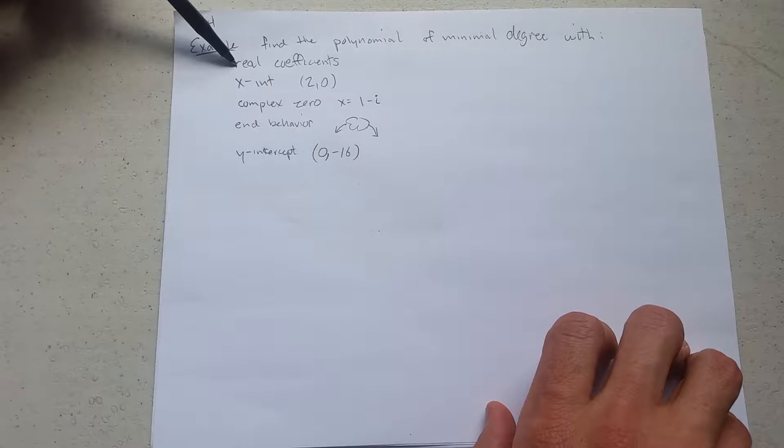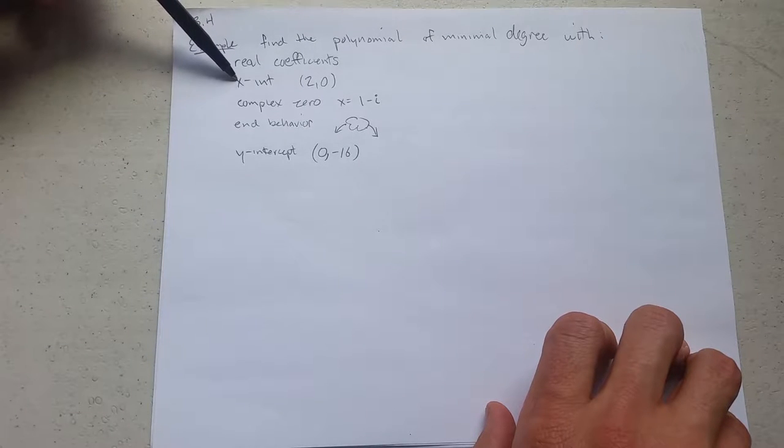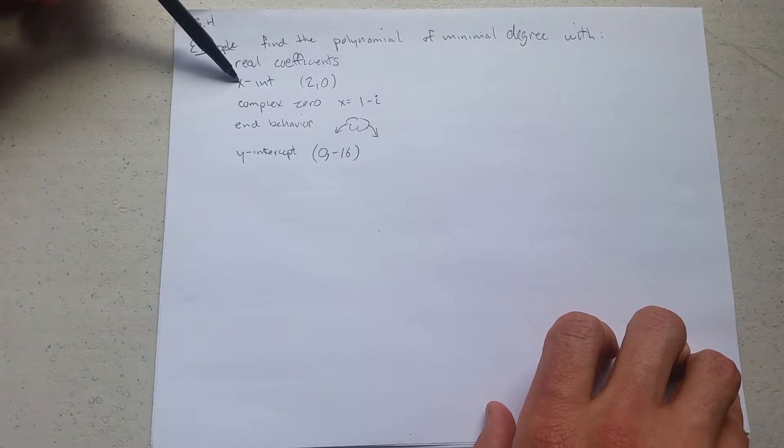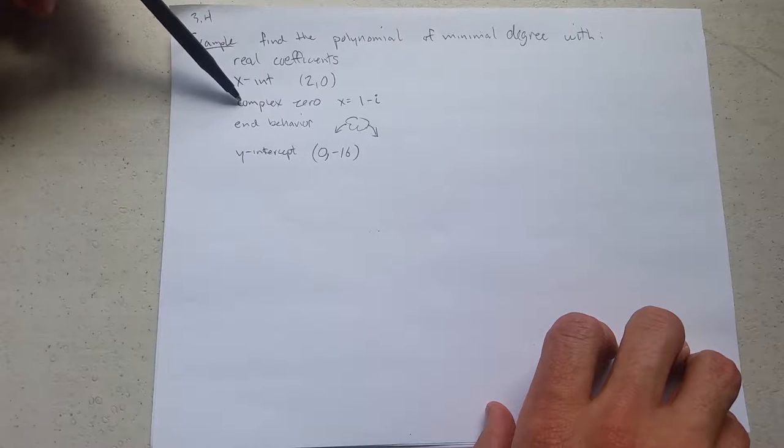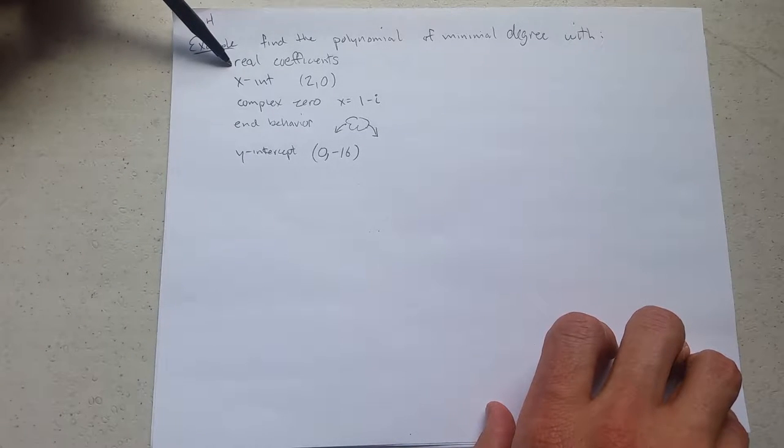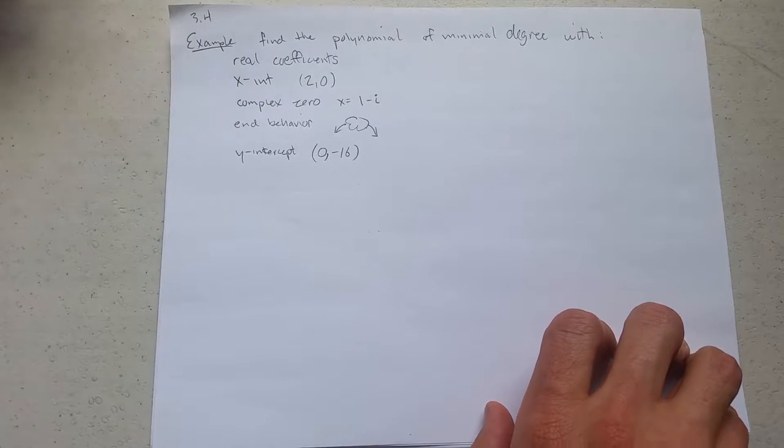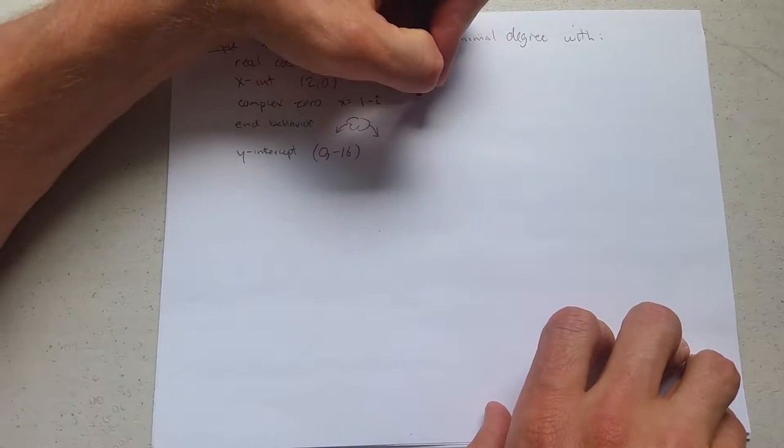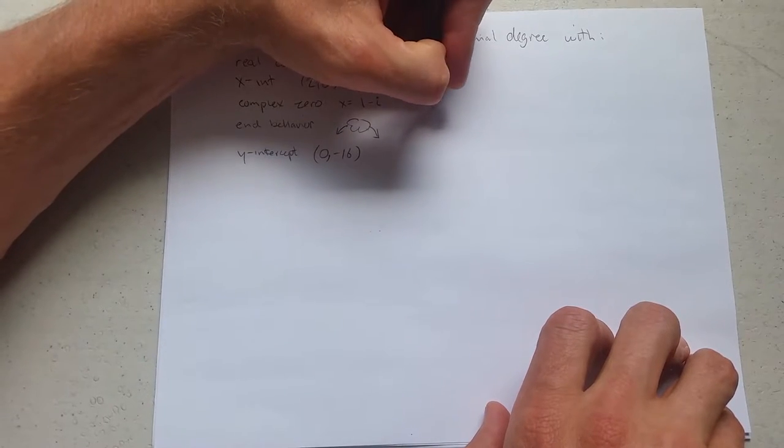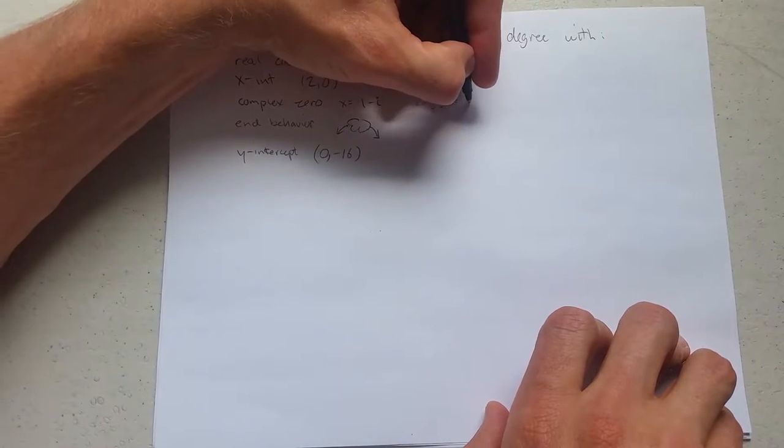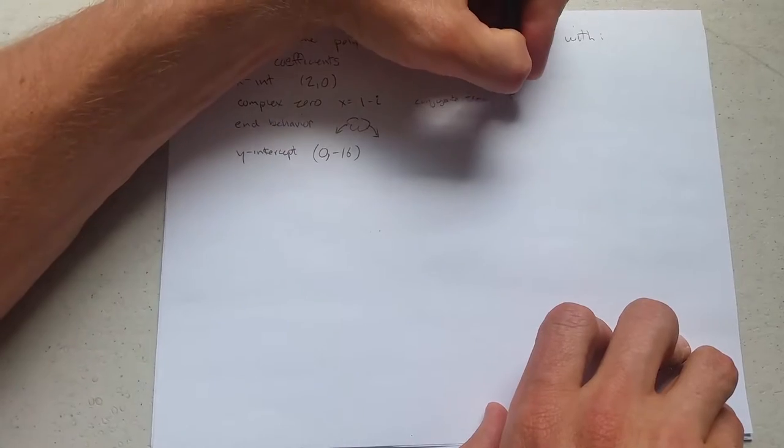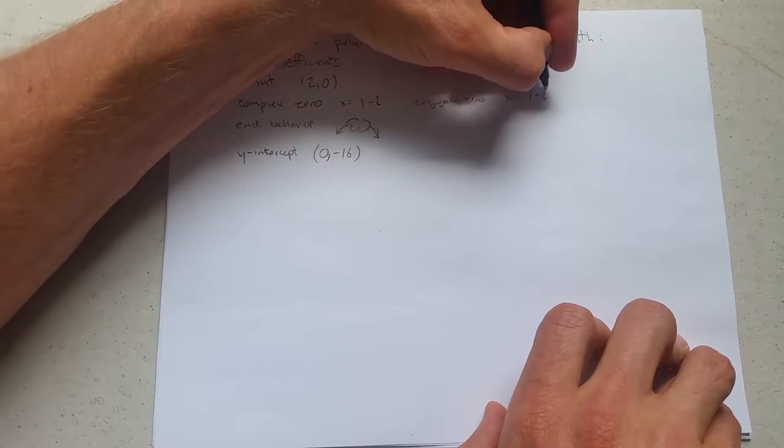So the conjugate pairs theorem's in place. We have an x-intercept—that's a real zero. We have a complex zero and real coefficients, so we automatically—those two properties mean we have the conjugate zero, which will be x equals 1 plus i.